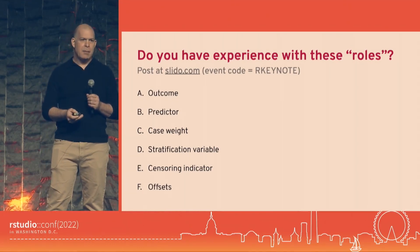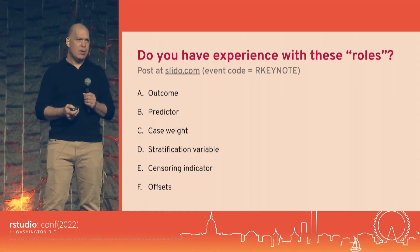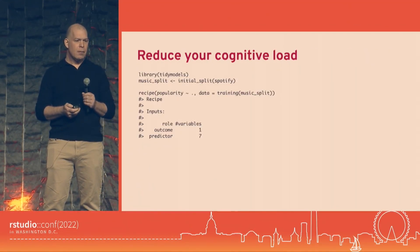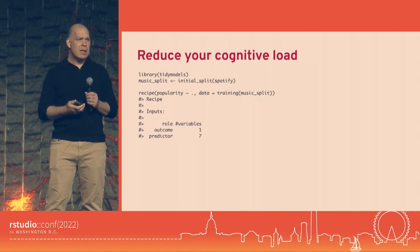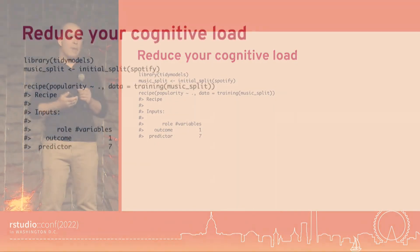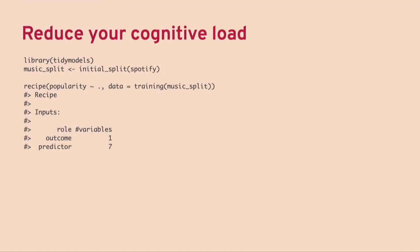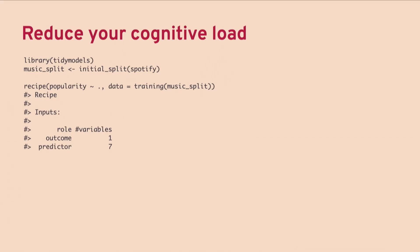Let's look at recipes for a minute as an example. Recipes are a combination of the R formula method you see in modeling functions, combined with a dplyr-style approach where you're piping in operations you want to do to your data before it gets to the model.